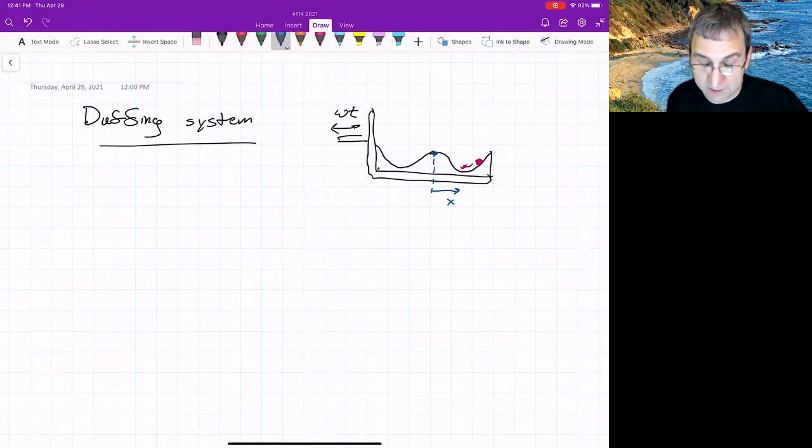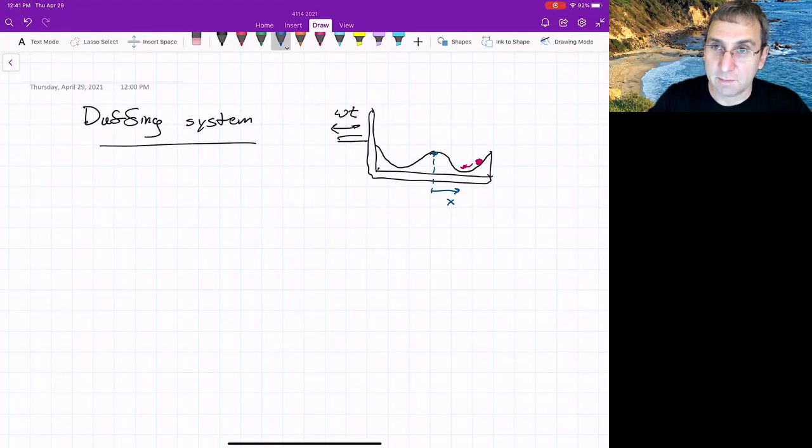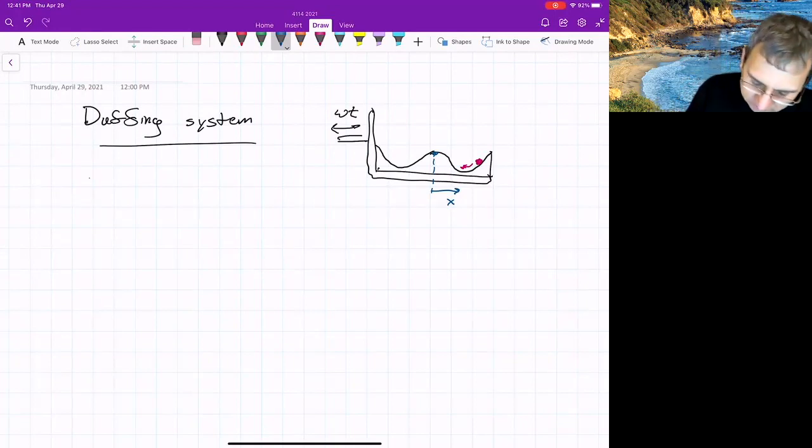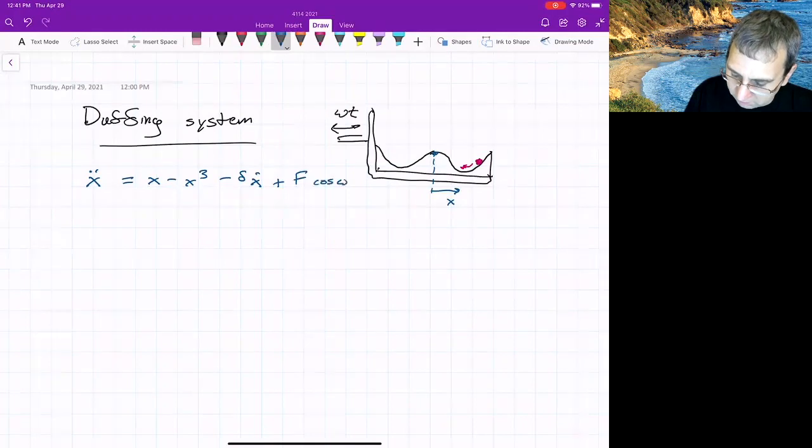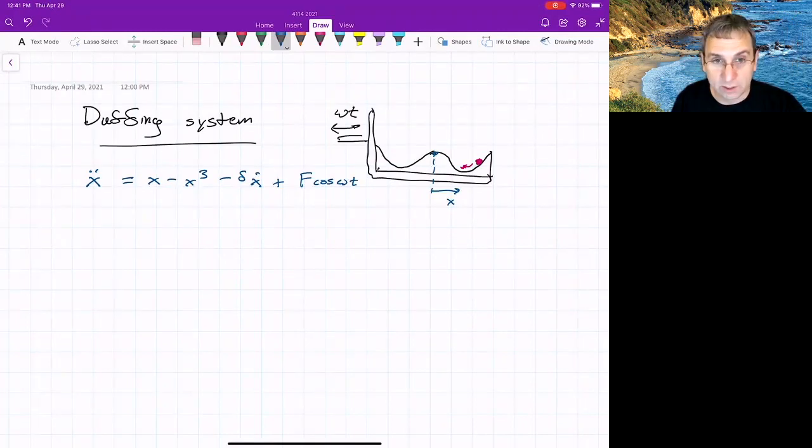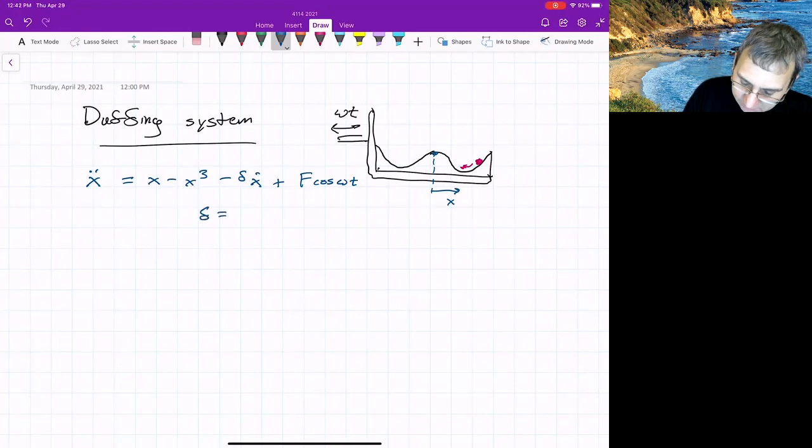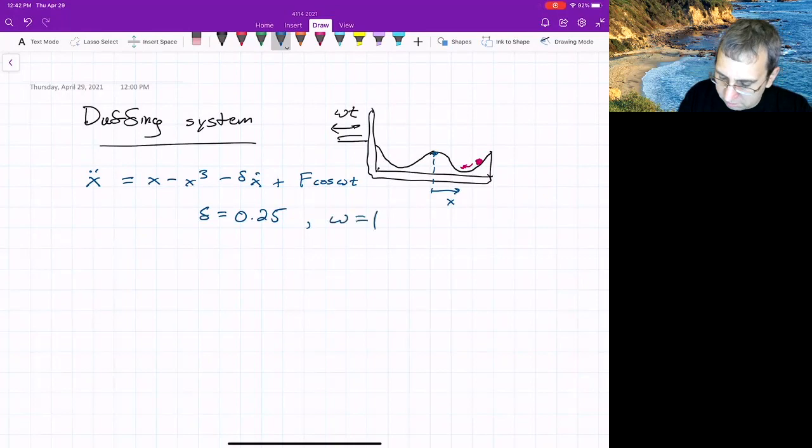If it was a frame that's not moving, it wouldn't be too terribly exciting because things would just dampen out and go away. So it looks like X double dot equals X minus X cubed minus delta X dot plus some forcing cosine omega T. We looked last time at delta of 0.25, that's the damping, and omega equals one non-dimensionalized.